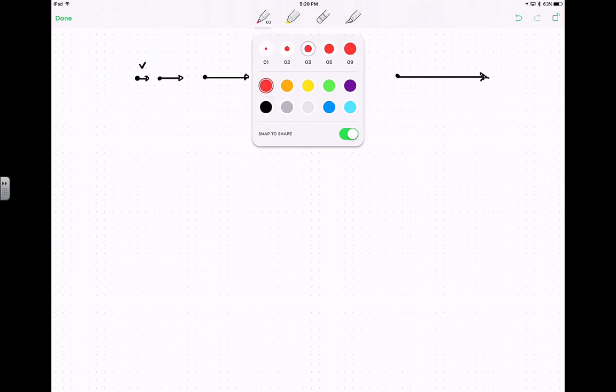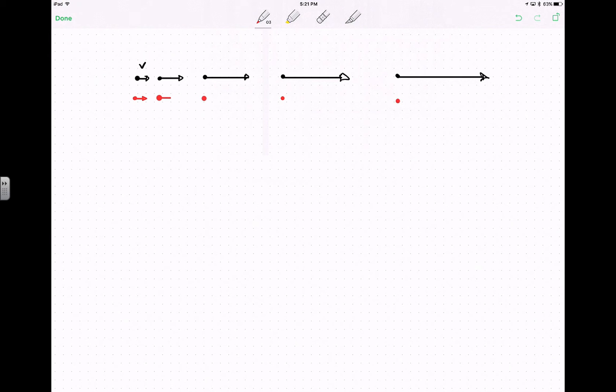And if I'm speeding up, my accelerations really need to point in the same direction as my acceleration. So it'll look something like this. And notice my acceleration isn't changing. These are classic constant acceleration problems.